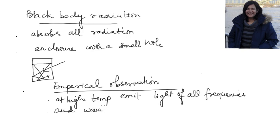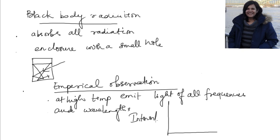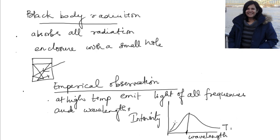Experimentally it was found that if I want to plot spectral intensity — that is radiant energy per unit time, per unit area, per unit wavelength — versus wavelength, I get a curve which peaks at some maximum wavelength. This is observed at some temperature T1. If I increase the temperature to T2, I get another curve and the peak shifts to a lesser wavelength. My lambda maximum shifts, and this is obtained at temperature T2 such that T2 is greater than T1.